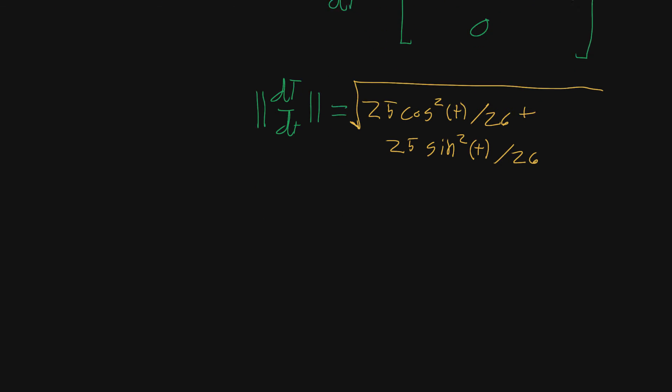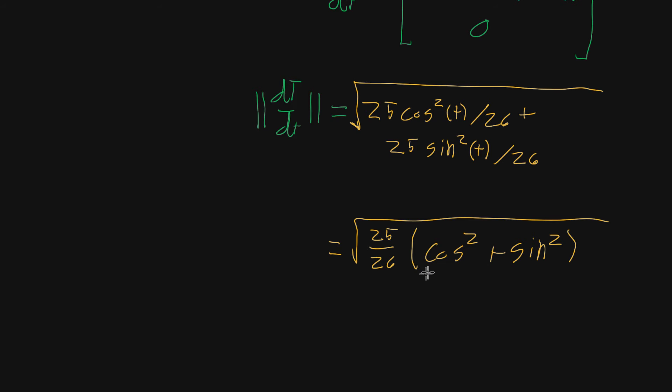And from that we can factor out 25 over 26 inside that radical, because both terms involve multiplying by 25 and dividing by 26. And what we're left with is a nice and friendly cosine-sine pair, the reason we love things involving circles—this always happens, nice cancellation. This just becomes one, so what we're left with on the whole is root 25 over 26.